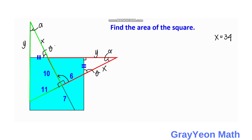Next, we need to find the value of this length, which is the hypotenuse of the green triangle. Since x = 34 and this distance is 10, then one leg is 44. The hypotenuse is unknown — let us call it z — and the other leg is 11.